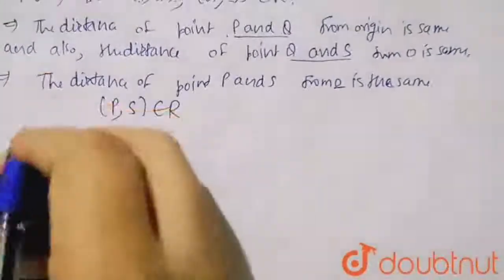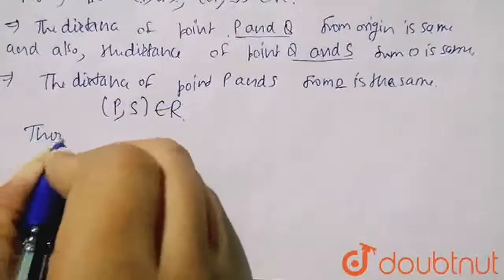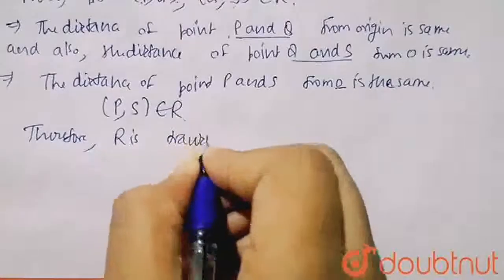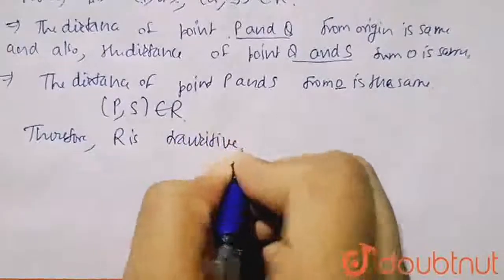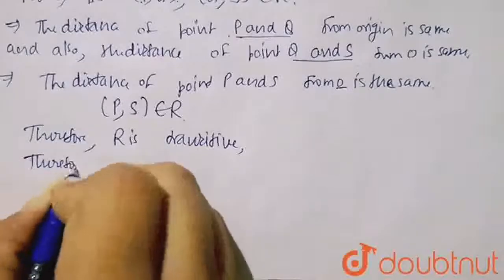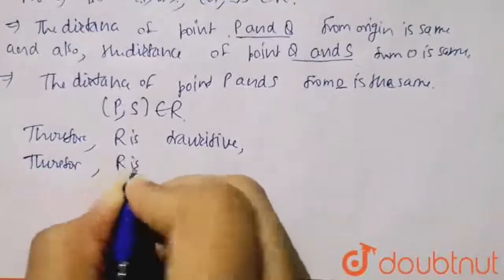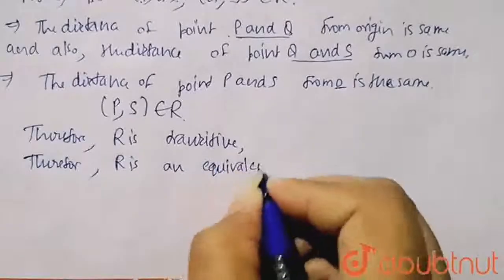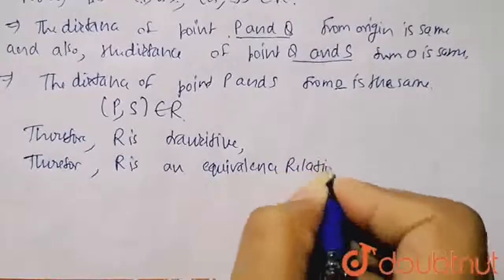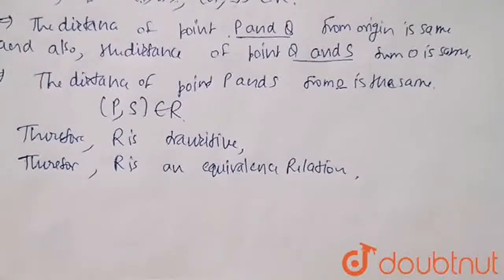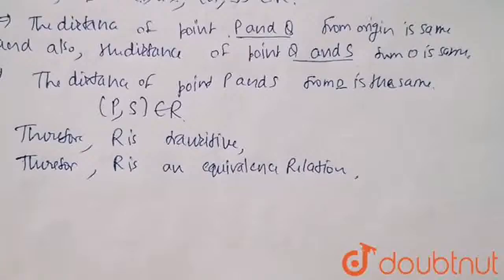Therefore, R is transitive. And therefore, R is an equivalence relation. So finally, what we had to prove — we proved that it is forming an equivalence relation — and it is finally proved. Thank you.